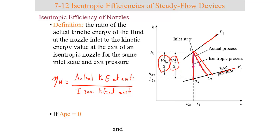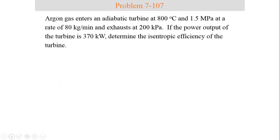At this point we're going to go through two example problems, with a third to be covered after Easter break. Here's the first problem statement: Argon gas enters an adiabatic turbine at 800°C and 1.5 MPa at a rate of 80 kg/min and exhausts at 200 kPa. If the power output of the turbine is 370 kW, determine the isentropic efficiency of the turbine.